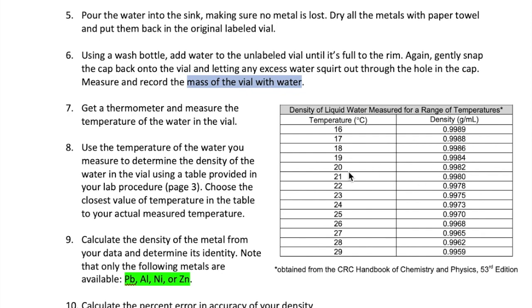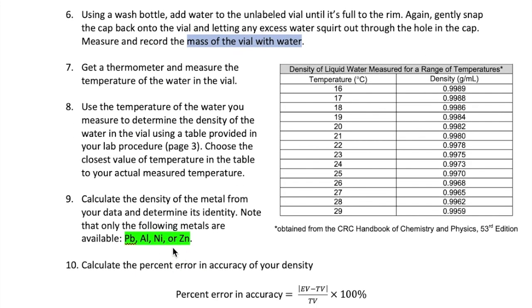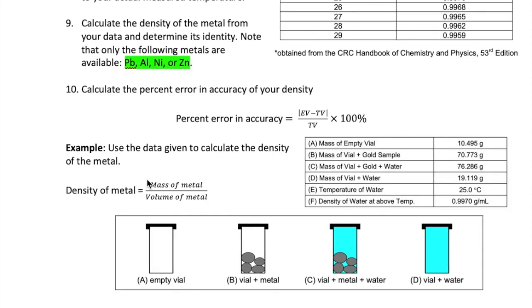The next step is to use the data you just obtained in this table to calculate the density of the metal and then to identify which metal you have. There are only four possible metals: lead, aluminum, nickel and zinc. Once you determine which metal you have, you're going to have to calculate the percent error and the accuracy of your measurement by comparing the experimental value of your density to the true value of density you get from your reference source.